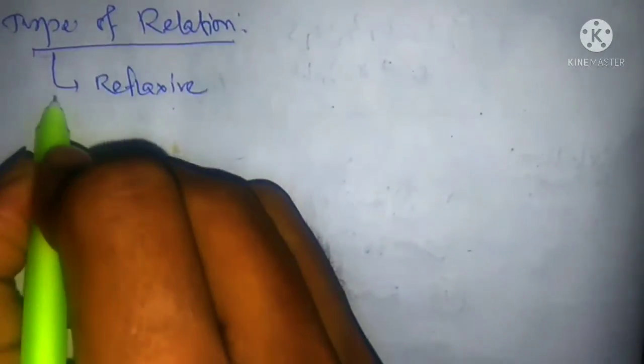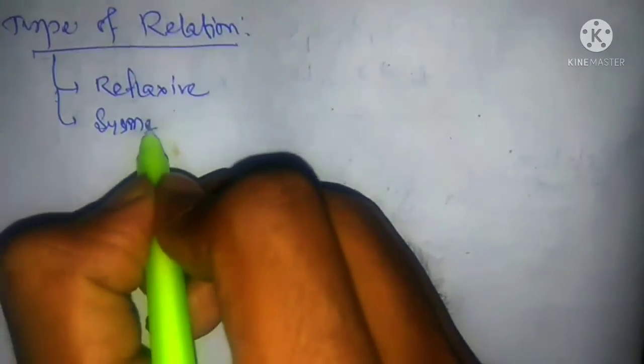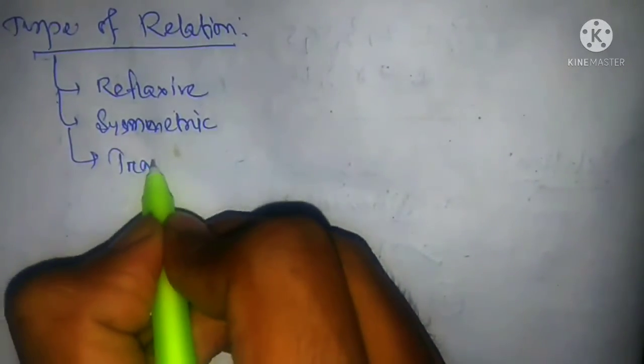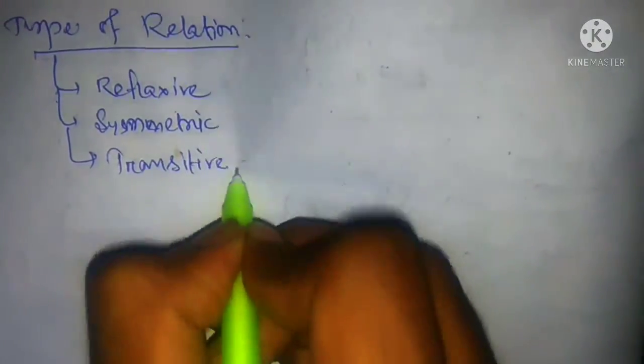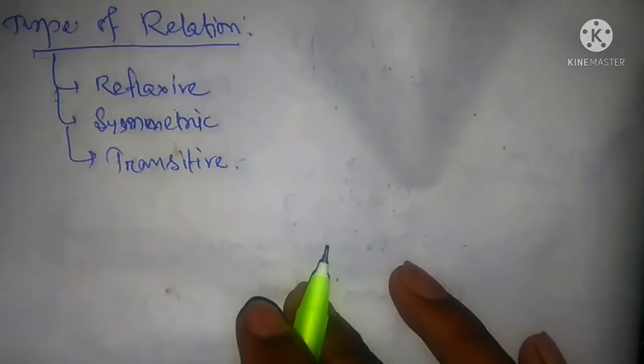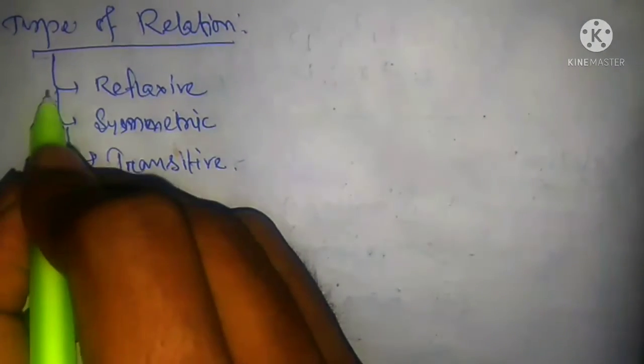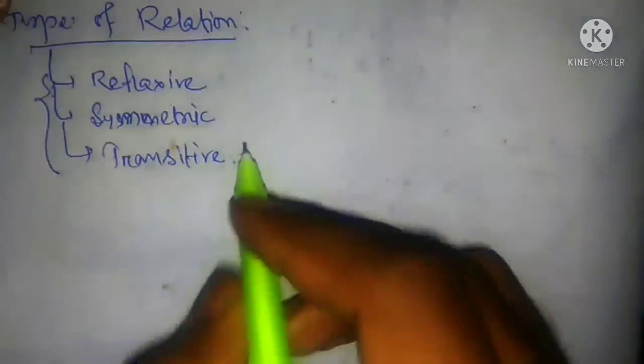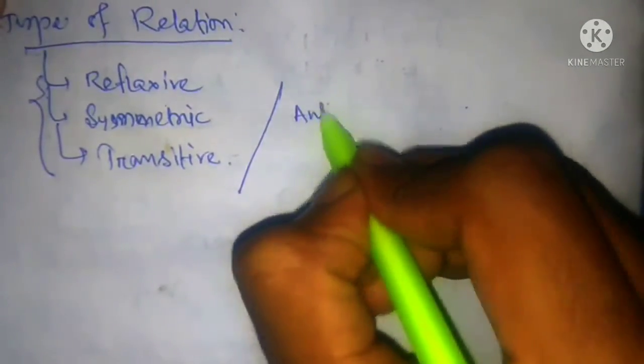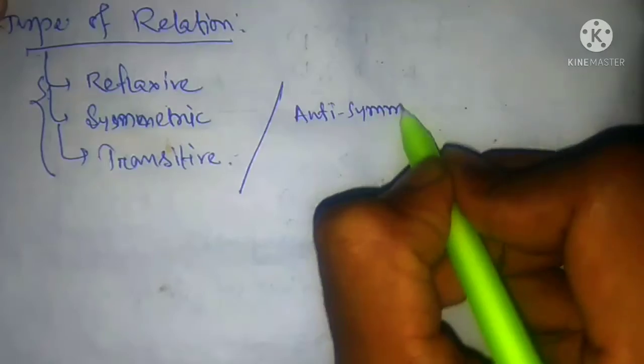Now, types of relations. How many types of relations are there in sets? The first is reflexive relation, the second is symmetric relation, the third is transitive relation, and another important one is anti-symmetric relation.